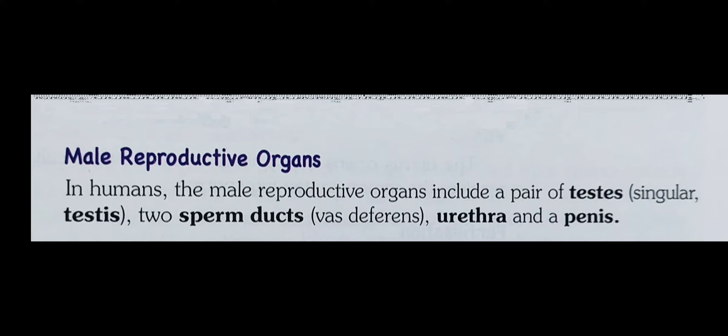Good afternoon students. Today we will study about Chapter 9, Reproduction in Animals. In the previous class we studied about the modes of reproduction and an introduction to sexual and asexual reproduction. Today we will study about the male reproductive organs.